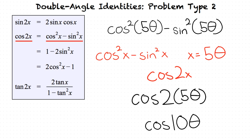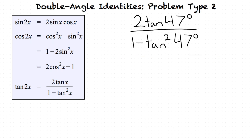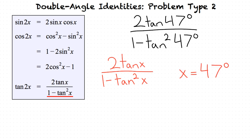Can we now do an example involving a tangent double angle formula? It's always important to work on your math skills by doing more example problems. For our last example problem, let's use 2 times tangent of 47 degrees over 1 minus tangent squared of 47 degrees. Let's first identify what form our problem is in. We can see that our problem is in the form of 2 times tangent of x over 1 minus tangent squared of x, with x equaling 47 degrees.